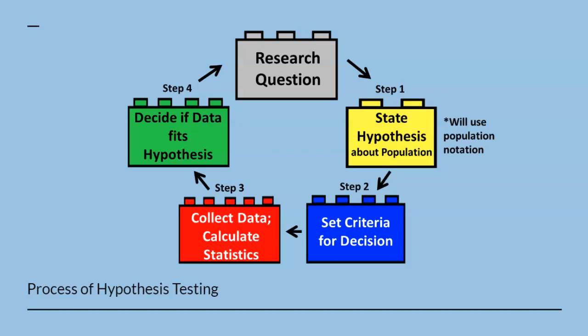Step 3, the red Lego, involves selecting a random, representative sample, collecting data after we experiment on that sample, and then calculate statistics on that sample. Basically, step 3 involves math and corresponding formulas. Finally, step 4, the green Lego, is to compare the sample data to the prediction made from the hypothesis in step 1. In essence, we are comparing the sample back to the population. We will make a decision to determine if the data fits the hypothesis or not.